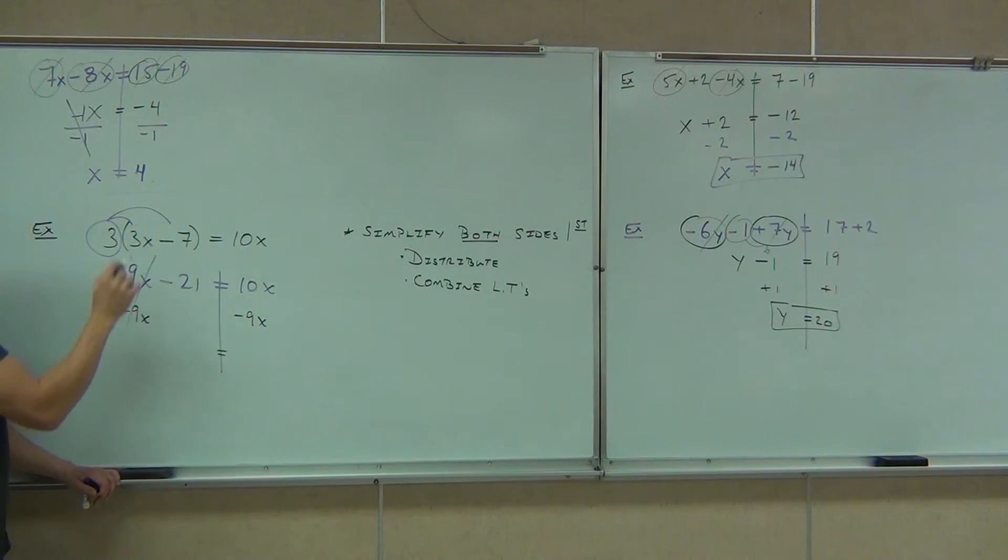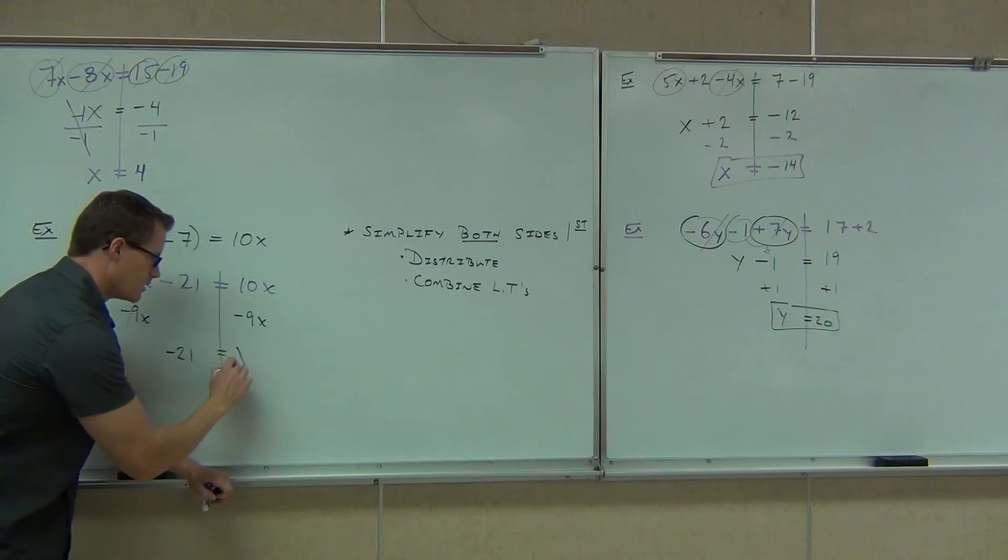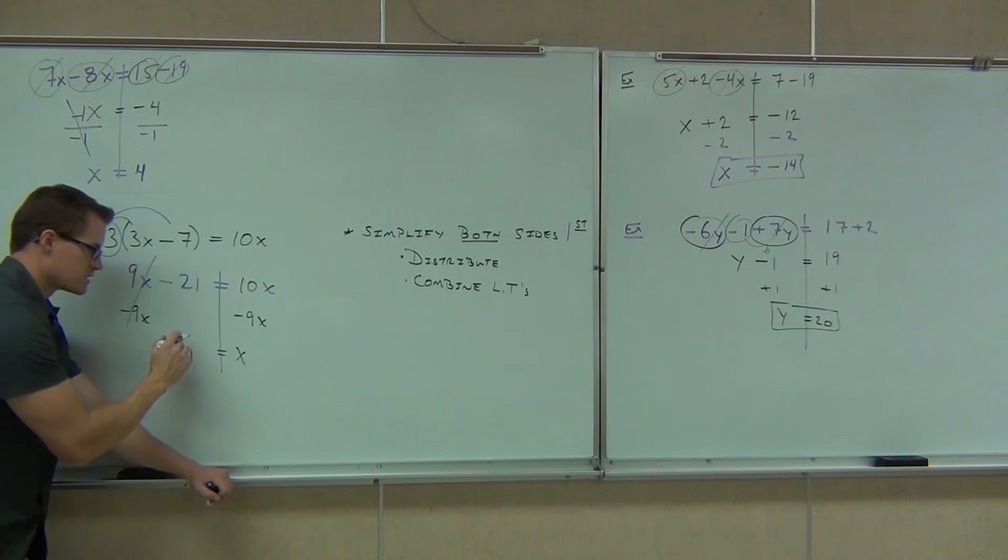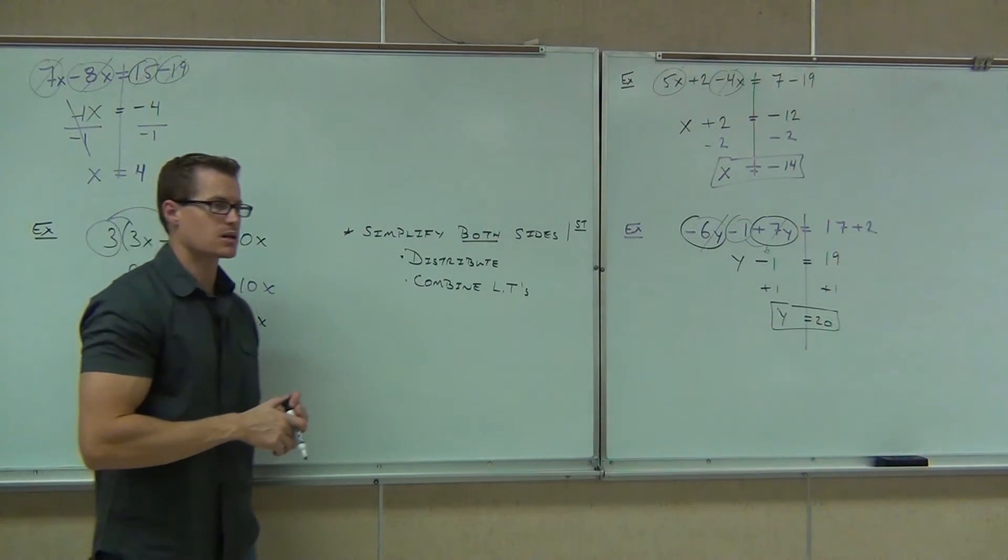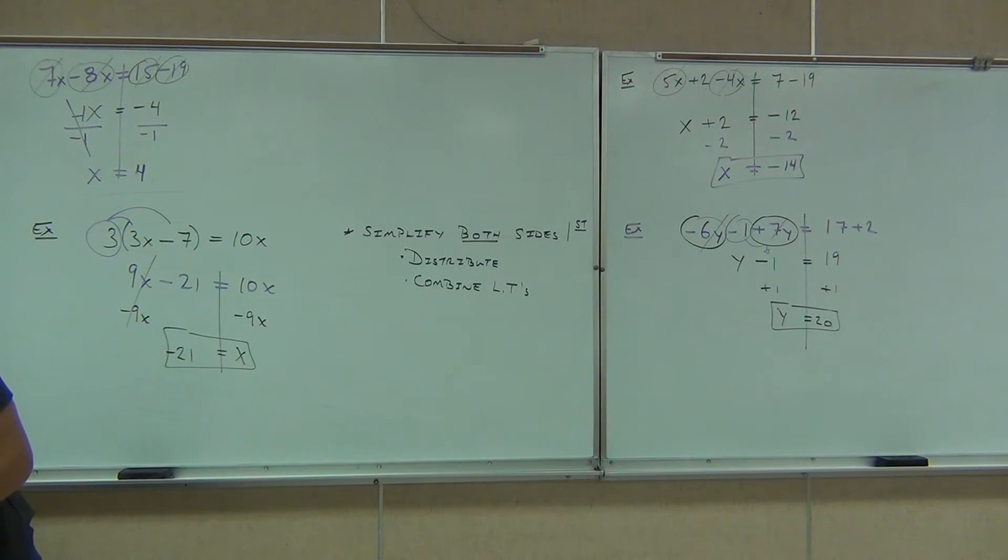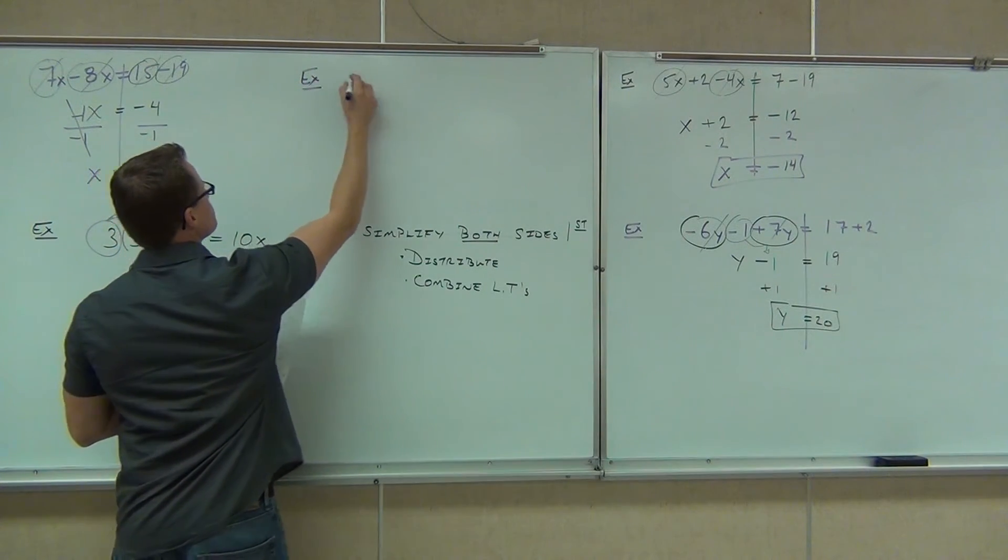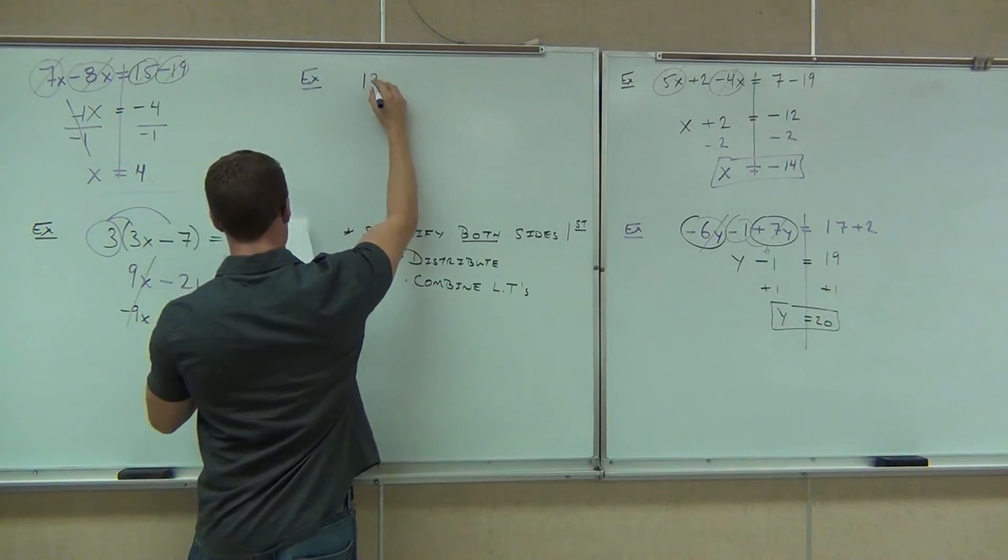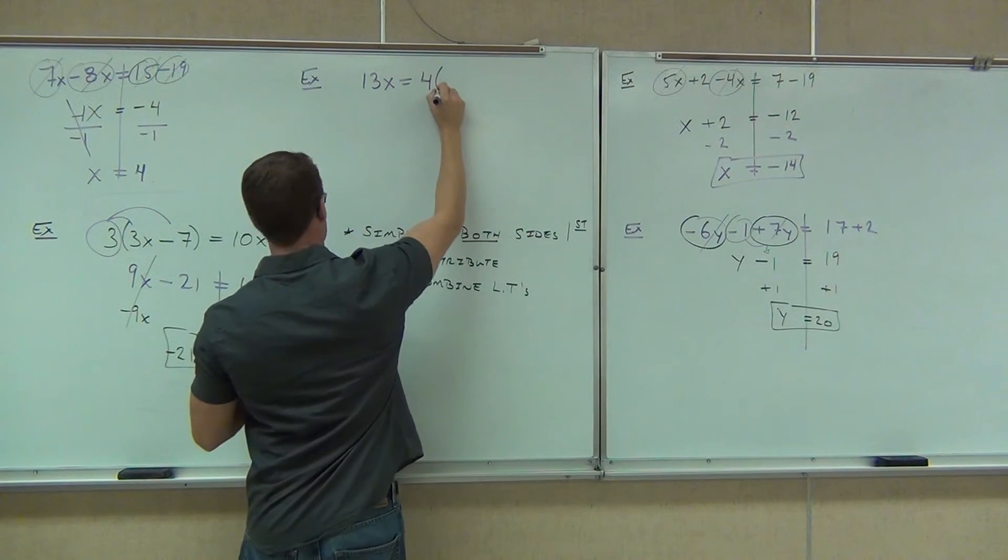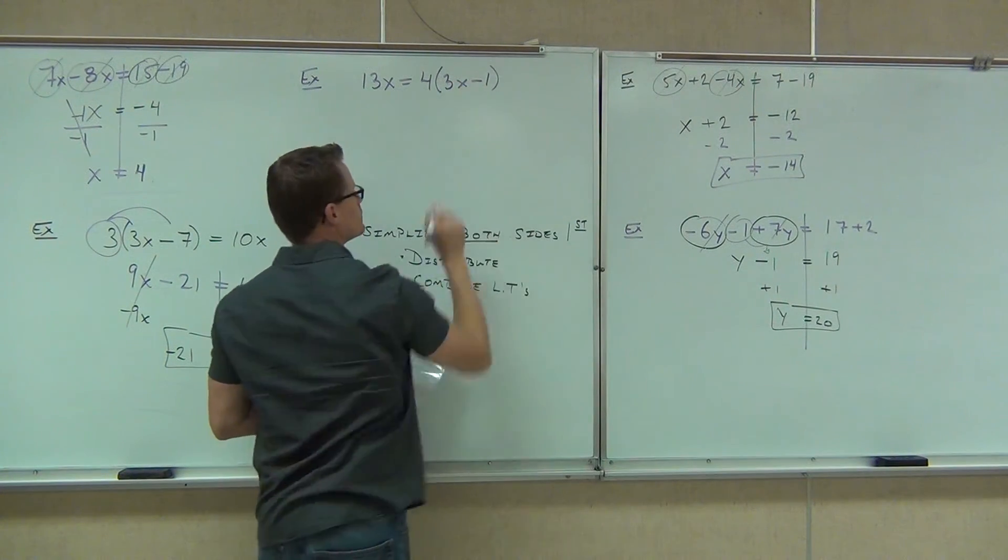On the left-hand side, the 9x's are gone. What am I going to have on the left-hand side? Left-hand side. On the right-hand side, 10x minus 9x gives you? X. Do you need to do any more work? No. You're done. X is negative 21. That's kind of nice. Why don't you try one of these on your own, okay?